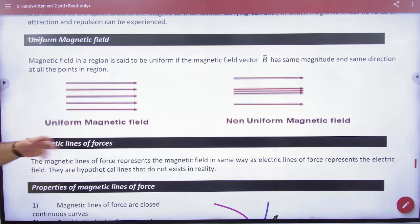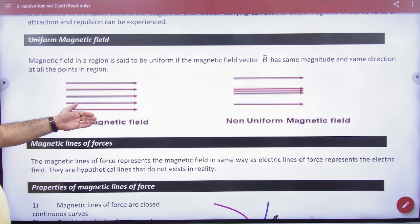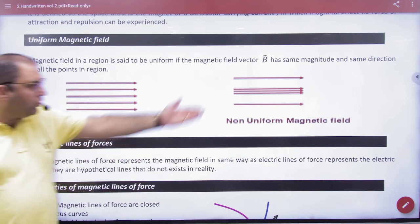Next is uniform magnetic field. This is done by electric field, this is the same way. If you have magnetic lines of force spacing together, uniform field is non-uniform field.